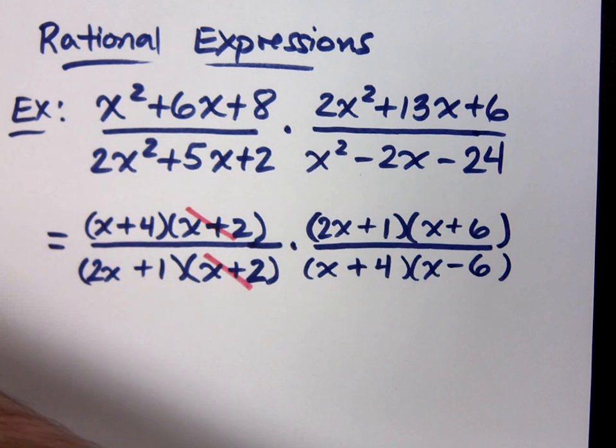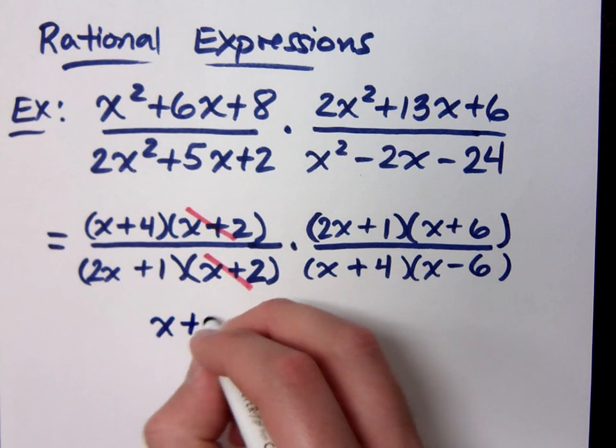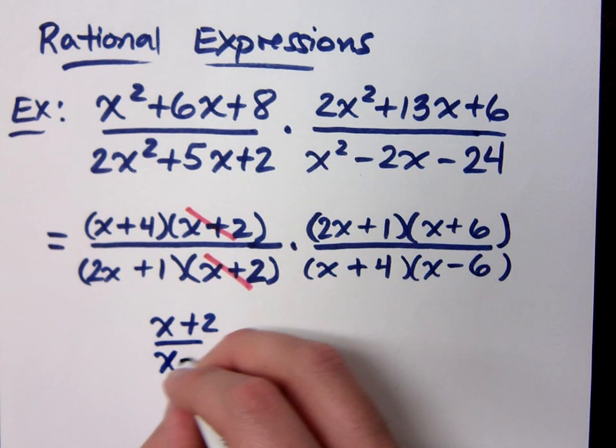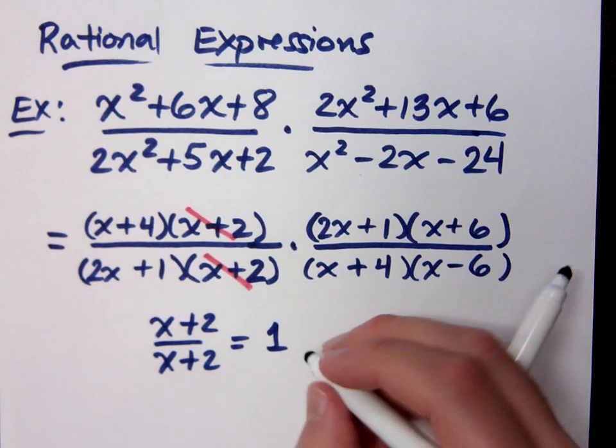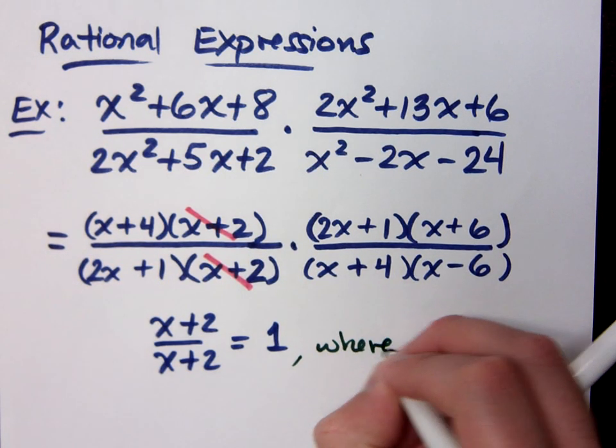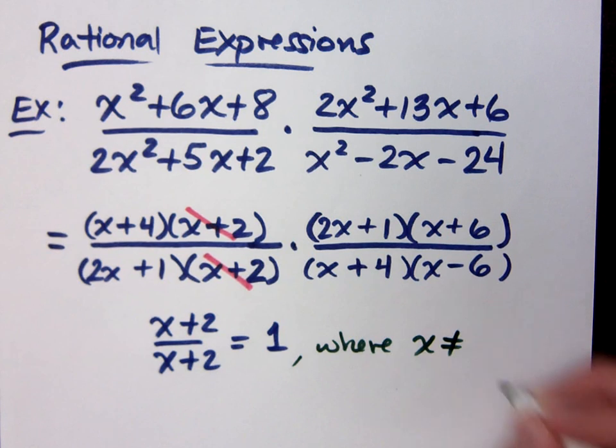Cancel each other. Well, because x plus 2 over x plus 2 is 1. This guy equals 1, but you have to understand that this is provided that x does not equal what number?